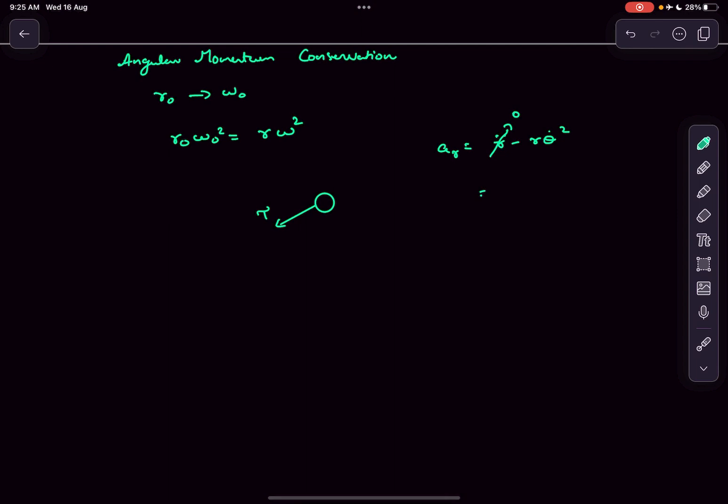This term goes to 0, so the radial acceleration is simply minus r theta dot square. The only force providing this acceleration is tension. So tension T equals mass times acceleration, which is r theta dot square, or simply mr omega square. We can borrow omega from here, giving us this value.